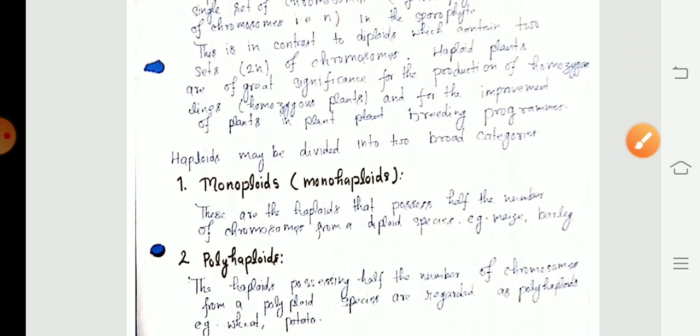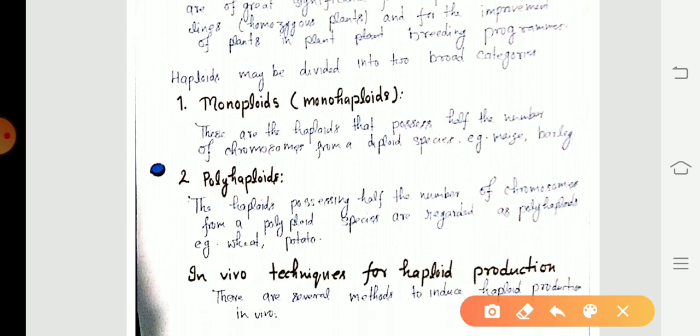Then I will discuss the haploid. Haploid may be divided into two broad categories: monoploids and polyhaploids. Monoploids are those haploids having half the number of chromosomes from diploid species. Polyhaploids are those haploids having half the number of chromosomes from polyploid species.